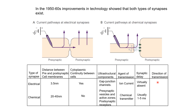In terms of direction of transmission, because in electrical synapses the two neurons are connected to each other, ions can usually flow in both directions — so these synapses are bidirectional. Whereas in the case of chemical synapses, there is a different kind of machinery on the side that releases the neurotransmitter and a very different machinery on the receiving side, so transmission can happen only in one direction — these synapses are unidirectional.